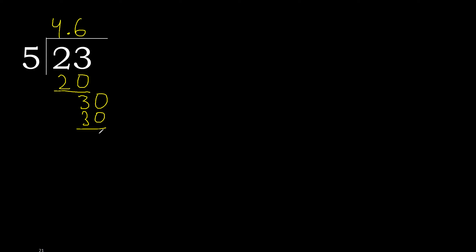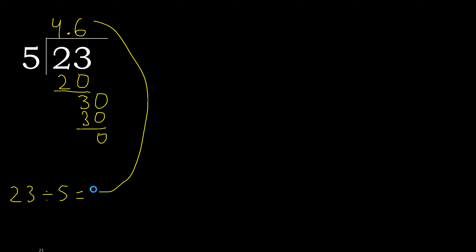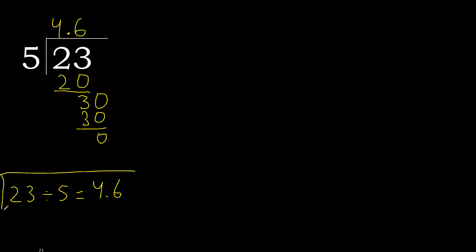30 minus 30 is 0. 0, therefore finish. Therefore 23 divided by 5 is complete: 4.6.